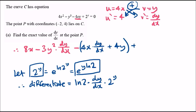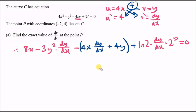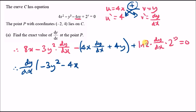Substituting x equals negative 2 and y equals 4: the bracket term gives negative 3 times 16 minus 4 times negative 2 plus 2 to the 4 times ln 2, which equals negative 40 plus 16 ln 2. The right side gives 8 times negative 2 minus 4 times 4 equals negative 32.